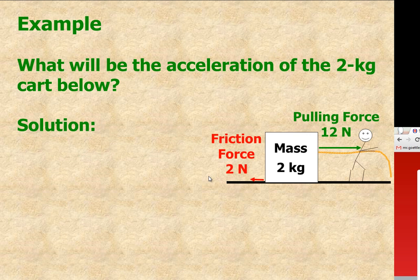And then here's an example similar to the example that you saw on the page in your textbook. We're pulling a mass that's two kilograms with an applied force of 12 Newtons, but there's two Newtons of friction force. What will be the acceleration of the two kilogram cart?